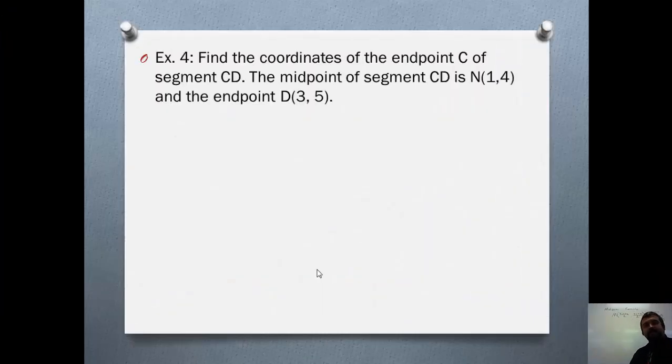Example 4 here. It says find the coordinates of the end point C of segment CD. The midpoint of segment CD is N 1, 4. And the end point D is 3, 5. Well, this one's kind of backwards. It's now asking me for the end point instead of the midpoint. However, I'm given the midpoint, so I'm still going to end up using the midpoint formula. However, in this case, I already know my midpoint. My midpoint is N is 1, 4. My end point is D, 3, 5. C, I don't know. But I'm going to call it X1, Y1.